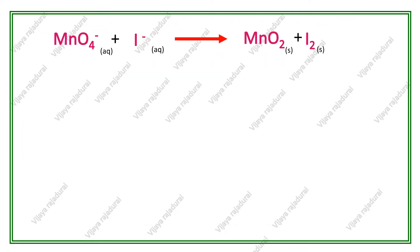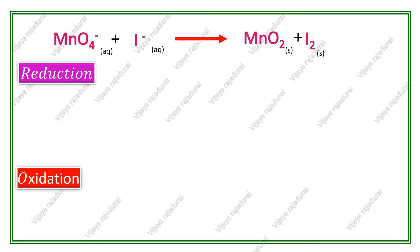In half reaction method, the first step is splitting of the redox reaction into reduction reaction and oxidation reaction. How could you know which one is reduced and which one is oxidized? MnO4 minus ion is changed into MnO2.